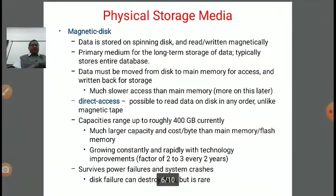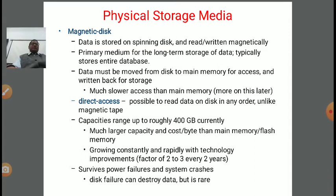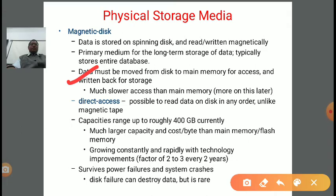Next is magnetic disk. Data is stored on spinning disks and read and written magnetically. It is the primary medium for long-term storage of data — typically storing the entire database, so capacity is large enough. Data must be moved from disk to main memory for access and written back for storage, so accessing time will be more. It is much slower to access than main memory because of this extra data-moving step — data moves from disk to main memory for access, and from main memory back to disk for storage.